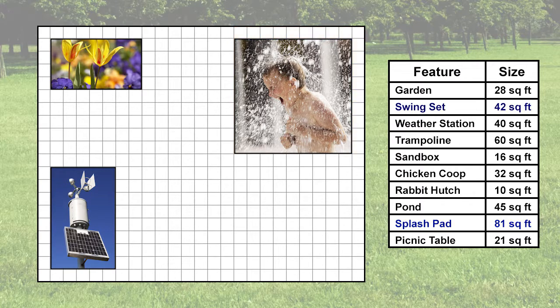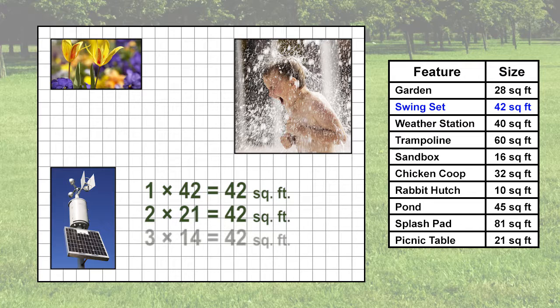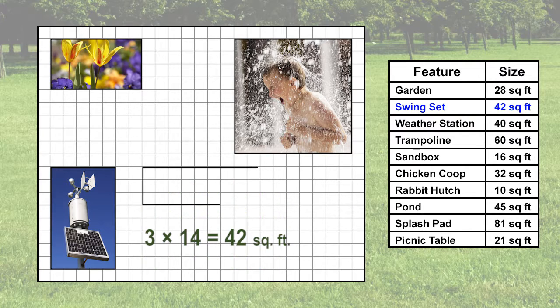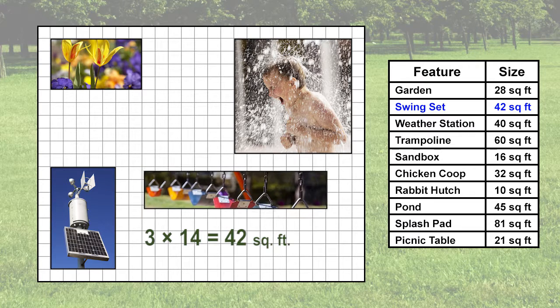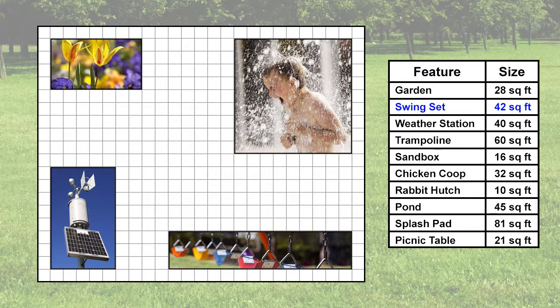We will place the swing set next. We know the area for the swing set is 42 square feet. The factors we can multiply together to make 42 are 1 times 42, 2 times 21, 3 times 14, and 6 times 7. If we make it long and thin, we could have more swings. Let's make it 3 feet times 14 feet.